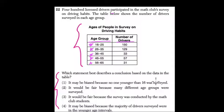But let's just check out their statements. Statement one says it may be biased because no one younger than 16 was surveyed. Well, it's true that no one younger than 16 was surveyed. However, no one below 16 will be driving—that's too young in New York State to have a license. So actually this question itself is biased; you have to know a little bit about driving in order to even answer it.